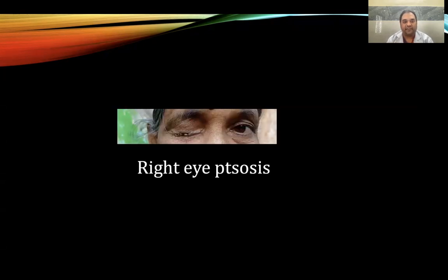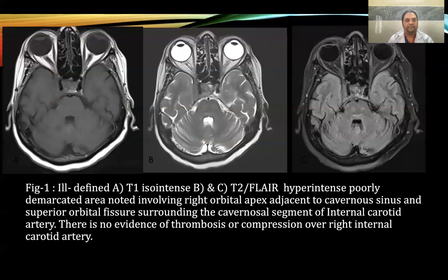This is an image of the 67-year-old female who presented with right eye ptosis. Figure 1: ill-defined T1 iso-intense and B and C images showing T2 and FLAIR hyper-intense, poorly demarcated area noted involving the right orbital apex adjacent to the cavernous sinus and superior orbital fissure, surrounding the cavernous segment of the internal carotid artery. There is no evidence of thrombosis or compression over the right internal carotid artery.